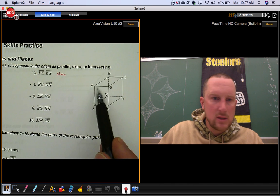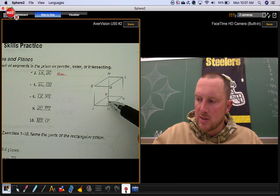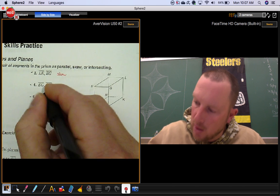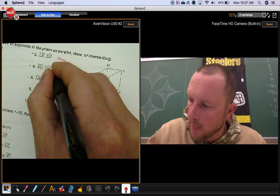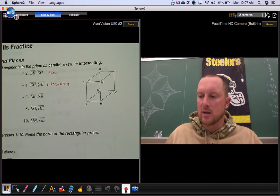Number four, segment EG and segment GH. Notice how they intersect here at point G. They touch each other. Another way you can tell is they both have a G. So those are intersecting segments.